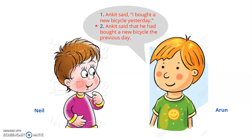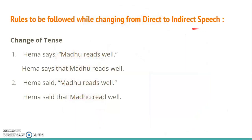Notice the changes effected in the first sentence when it is turned into indirect speech. The comma after 'said' and the quotation marks are removed. The conjunction 'that' is used to introduce the indirect statement. The pronoun 'I' is changed into 'he.' The verb 'bought' is changed into 'had bought.' So when changing from direct to indirect speech, we have to follow certain rules regarding change of tense, pronouns, and time and place. Today I am going to discuss the rules regarding change of tense.